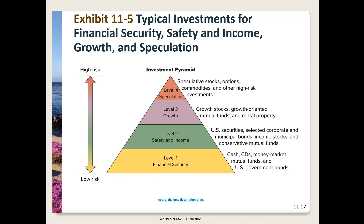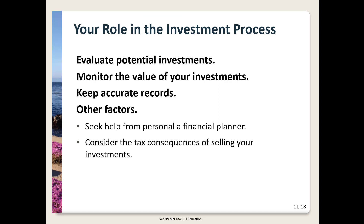Exhibit 11-5 on page 358 lists typical investments for financial security, safety, income, growth, and speculation. The idea is to take care of each level before moving up to the next level of risk, with speculation at the very top. Evaluating investments is not a one-time thing — you have to monitor your investments and make adjustments when necessary, and keep good records. If this seems daunting, seek the help of a certified financial planner, who is trained specifically to help with all types of investments and tax planning.